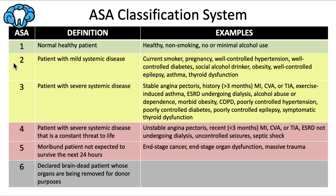Then we go to ASA 2, which is probably the most common of all these rows. This is a patient with mild systemic disease, and they only have to have one of these things — it doesn't mean they have all of them. Only one would automatically put them in ASA 2. This could be that they're a current smoker, or that they're pregnant, which also puts someone in this category.